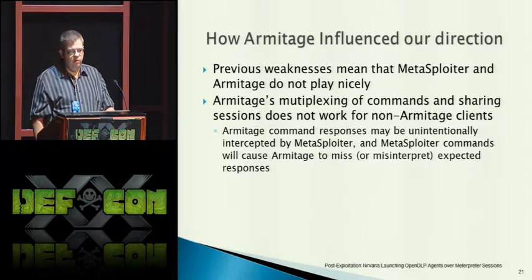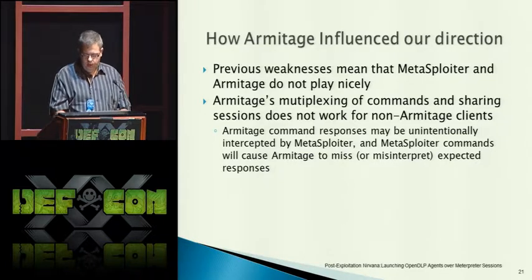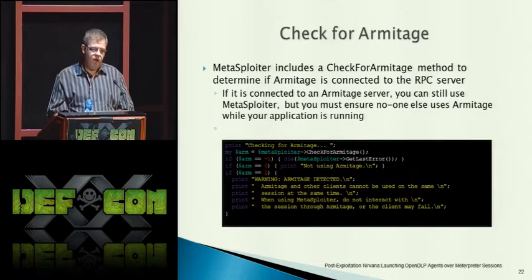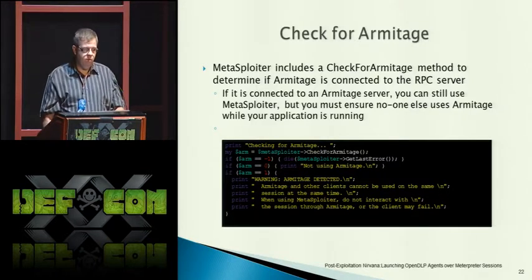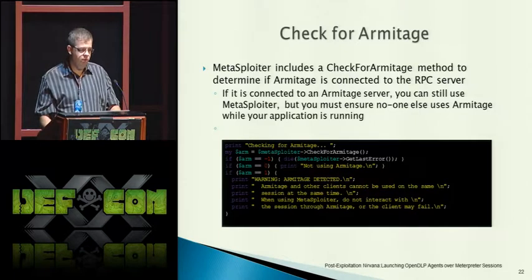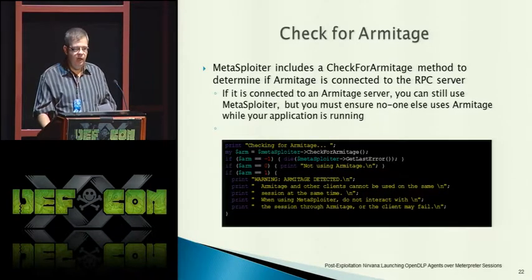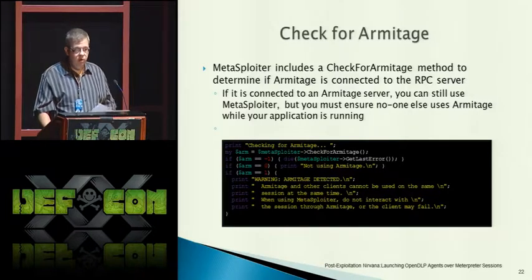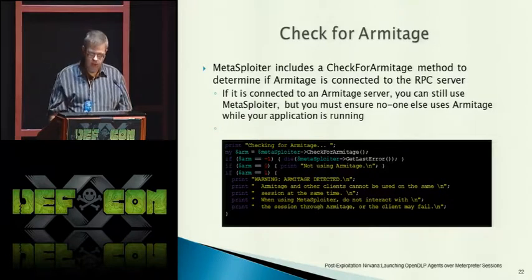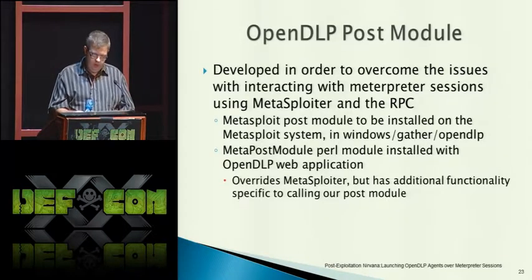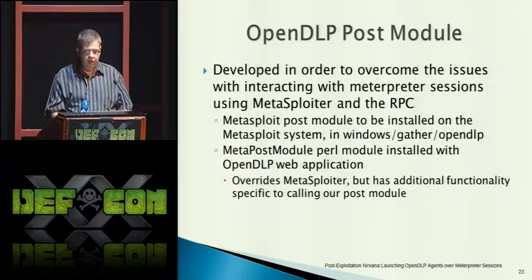As a stopgap measure, I created a method that checks to see if Armitage is currently using the RPC connection we're connected to and returns true or false. But all I can do is display a warning in OpenDLP saying you're connected to Armitage and you might want to tell people not to use it right now. That wasn't ideal — it's not what we wanted.